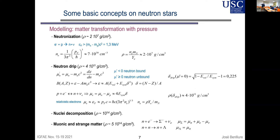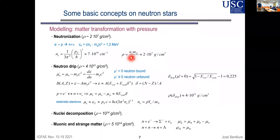Going deeper, at around 10^7 grams per square centimeter, the next effect is neutronization. At these densities, the energy of electrons is sufficient to overcome the mass difference between neutrons and protons. Electrons are captured by protons and produce neutrons — this is the neutronization of the star. The next effect is neutron drip: nuclei become more and more neutron-rich, and at some point the strong force can no longer bind all those neutrons to the nucleus.